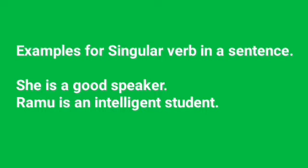Examples for singular verb in a sentence: 'She is a good speaker.' 'Ramu is an intelligent student.' Here, the verb 'is' is a singular form. The subjects 'she' and 'Ramu' are also singular. So, a singular subject takes a singular verb here.